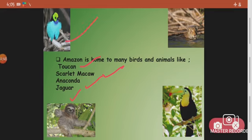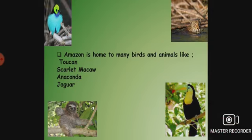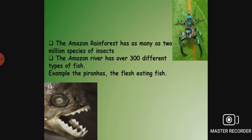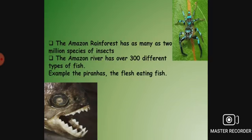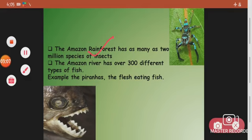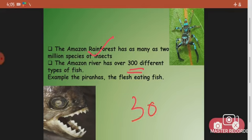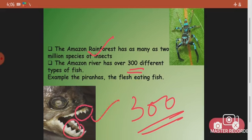You can look at the pictures of some animals which live in the Amazon rainforest. The Amazon rainforest has as many as 2 million species of insects. The Amazon River has over 300 different types of fish, and the most important example is piranhas — these are flesh-eating fish with teeth.